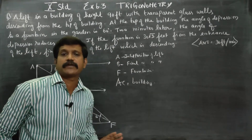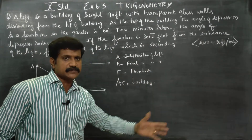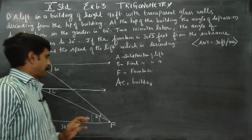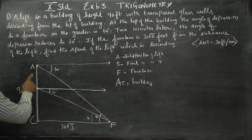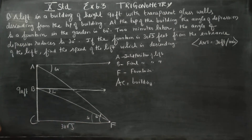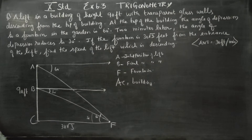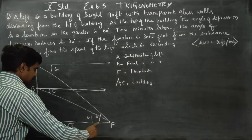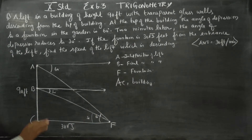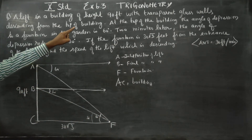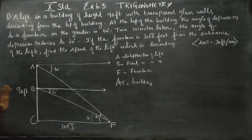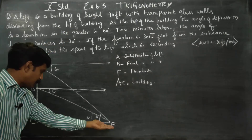We want trigonometry — trigonometry approach, because there is no geometry flavor. I am going to take the bigger triangle A, B, C with 60 degrees. The bigger triangle is all measured. The height of the building is 90 feet and the distance to the fountain is 30 root 3.